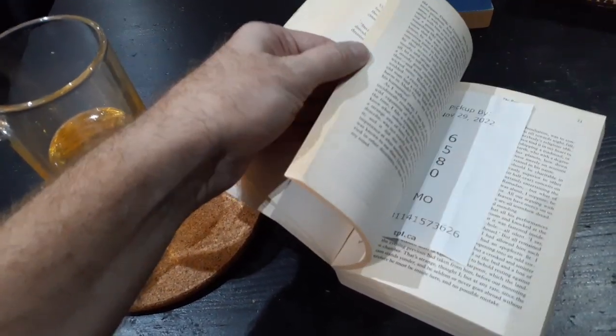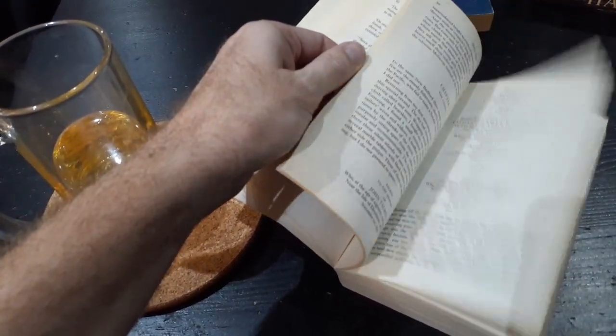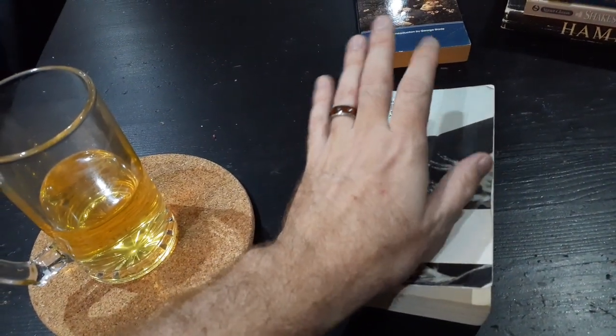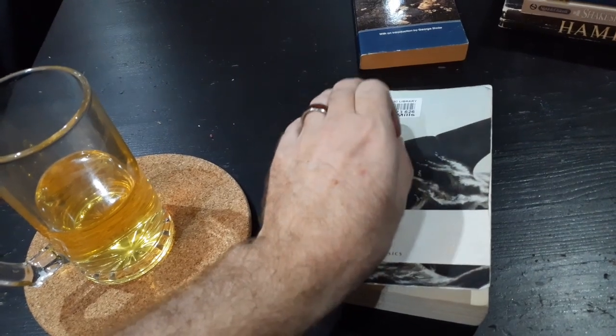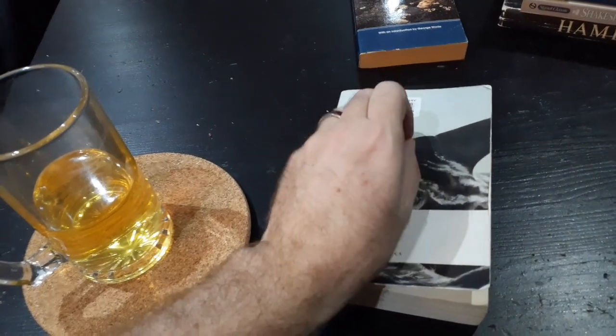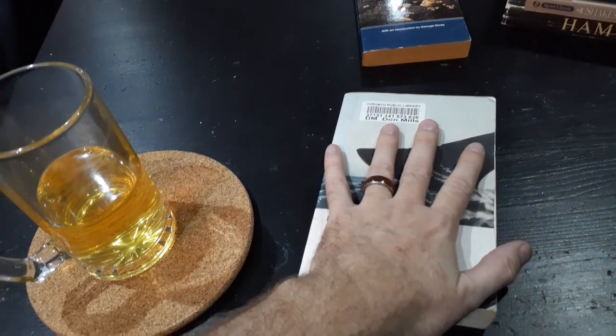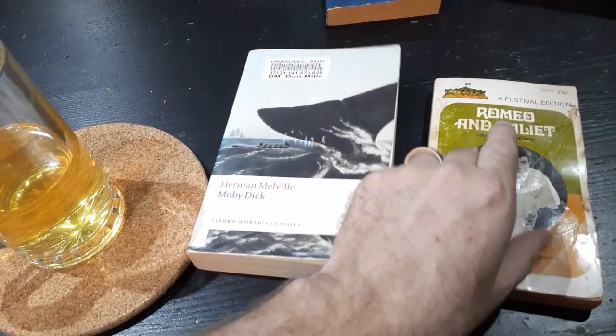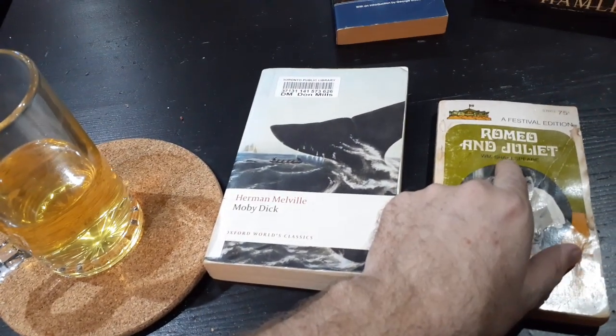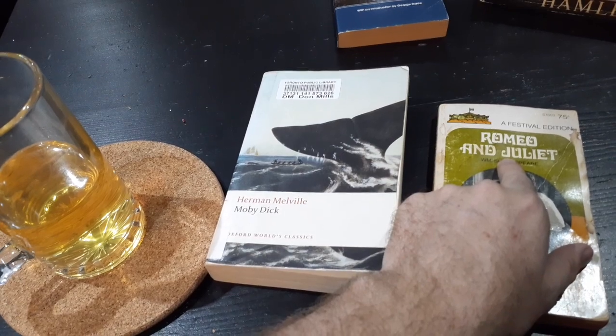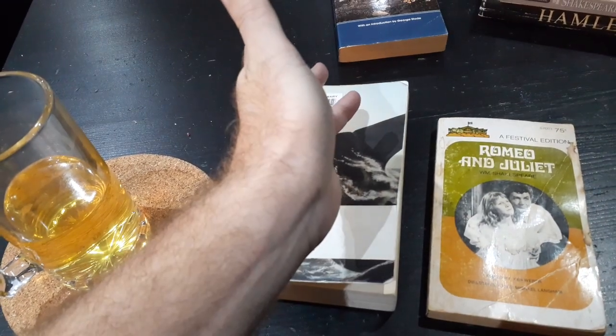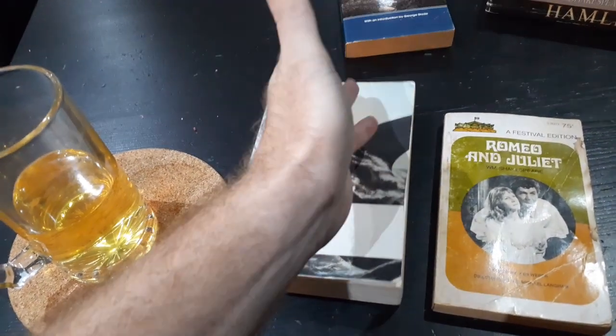Now, why do I also like sometimes reading the classics? Well, the classics often have what I would describe as nutshell stories. And I'll give you an example of a nutshell story. Romeo and Juliet. Romeo and Juliet is a nutshell story because it's a tale of two lovers who start off as enemies. And then they become lovers.